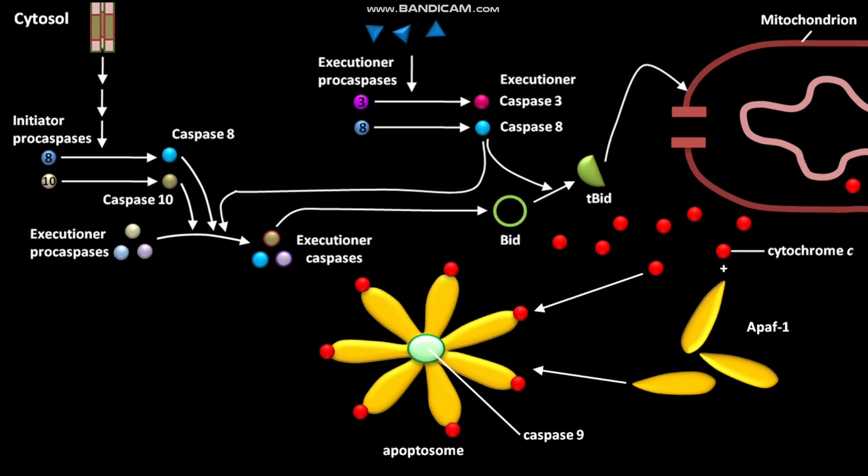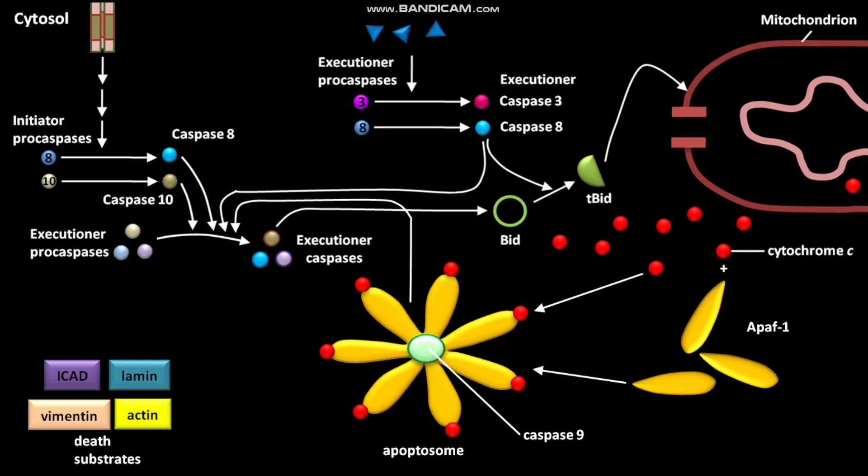The apoptosome also helps in the conversion of inactive other executioner procaspases into active caspases. The target cell's cytosol has many death substrates like ICAD, lamin, vimentin, and actin. Other active executioner caspases help in the conversion of these death substrates into degraded proteins.